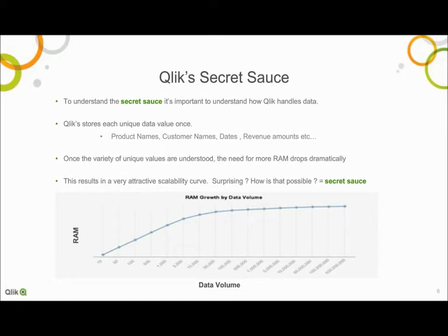The effect is that the greater the number of rows added into an individual application, the less computer memory — RAM — is required to handle those increases. The curve this results in is a very attractive scalability curve that allows organizations to reliably predict and deploy Qlik, and progressively add more users, more applications, and more data.